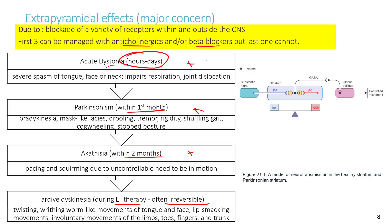The first three types of EPS can be managed with anticholinergics or beta blockers. In the normal brain, the substantia nigra contains neurons that produce dopamine, released in the striatum. A balance between dopamine and acetylcholine produces controlled movement.